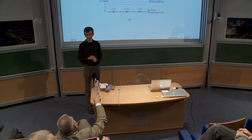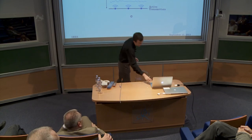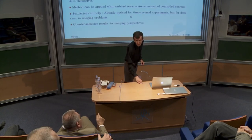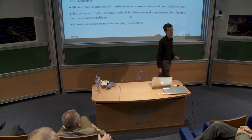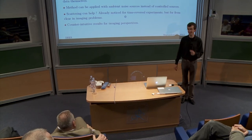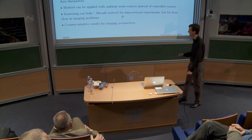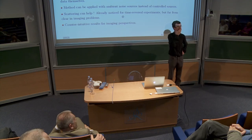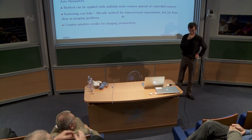On higher-order fluctuations: third-order correlations are zero by symmetry, just like the mean. The useful additional information is in the fourth-order correlations. Any other questions? If not, we thank the speaker.